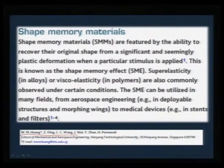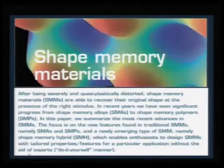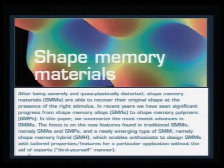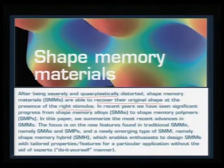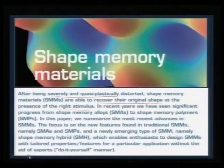As I mentioned, severely and quasi-plastically distorted materials recover to their original shape in the presence of the right stimulus. There are two or three groups of compounds we will study today: one is super-plastic or shape memory alloys, the next is shape memory polymers, and we will also show some examples of shape memory hybrids that have both the polymer and alloys impregnated in each other. Shape memory alloys are thermo-responsive.